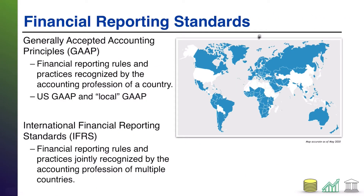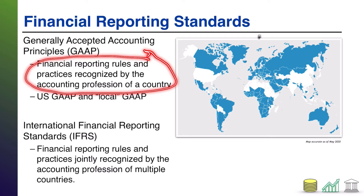So first up, financial reporting standards or accounting standards — there are two main ones you're probably going to hear about. One of those is what we call generally accepted accounting principles. Generally accepted accounting principles are rules and practices recognized by the accounting profession of a given country. In the United States, we refer to these as U.S. GAAP or United States GAAP.